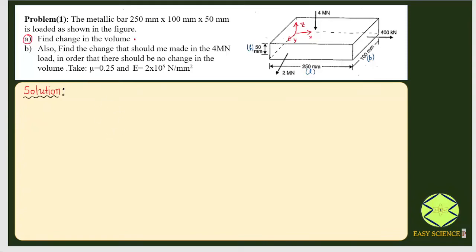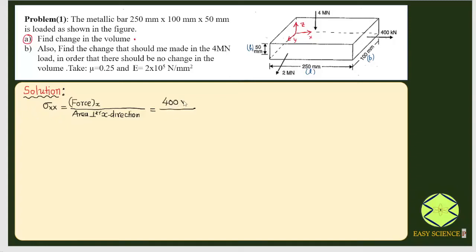First, calculating the stresses in x, y, and z direction. Stress in x direction is force in x direction divided by the area of the plane perpendicular to x direction. The force in x direction is 400 kN, so 400×10³ N. The area perpendicular to it is 100×50. The value turns out to be 80 N/mm².